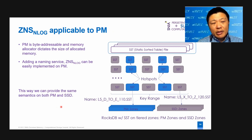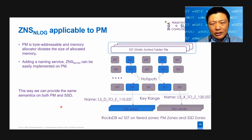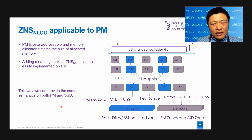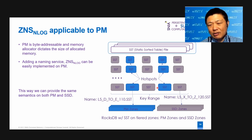ZNSNLog is also applicable to persistent memory. As we know, persistent memory is natively byte-addressable, so byte-appendable. Also, the memory allocator will dictate the size of the allocated memory region. So if we add a naming service, we can implement ZNSNLog on persistent memory easily. This way, we can provide the same semantics on both persistent memory and SSD. For example, given a RocksDB with SST files on tiered zones, we can map the SST files of hotspot — like the ones shown in blue — onto persistent memory zones, giving us a very high-performing RocksDB that's also cost-effective.